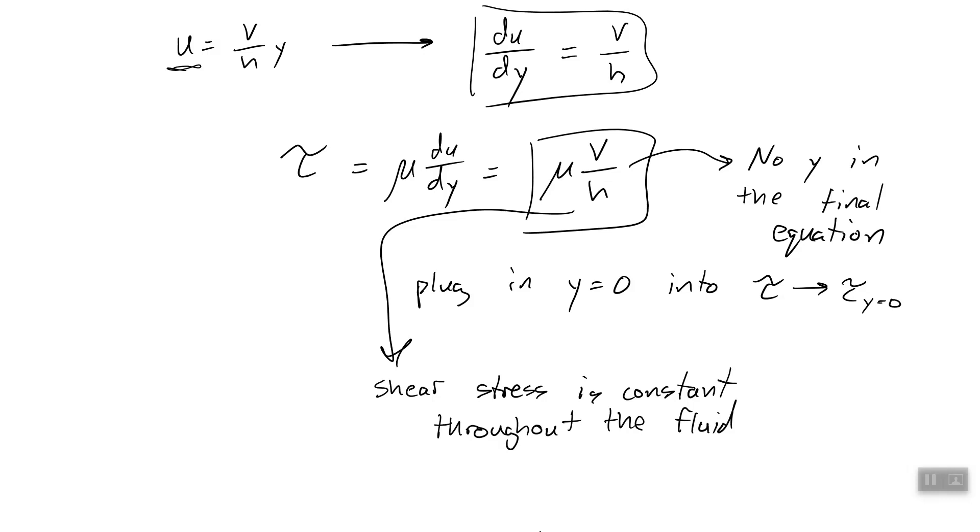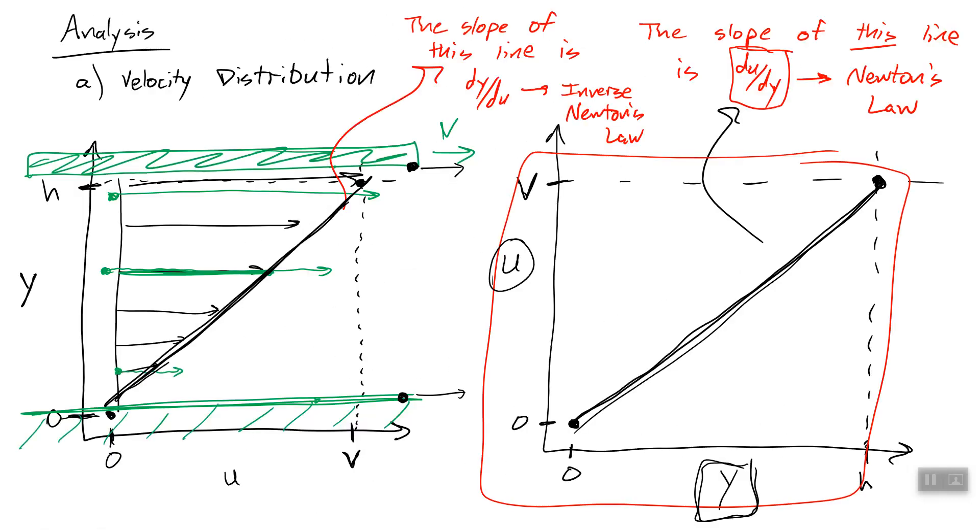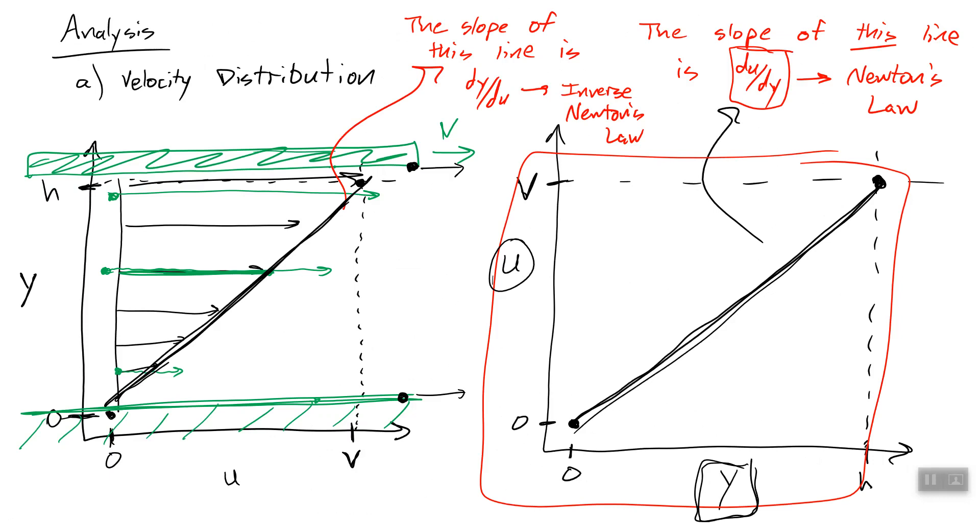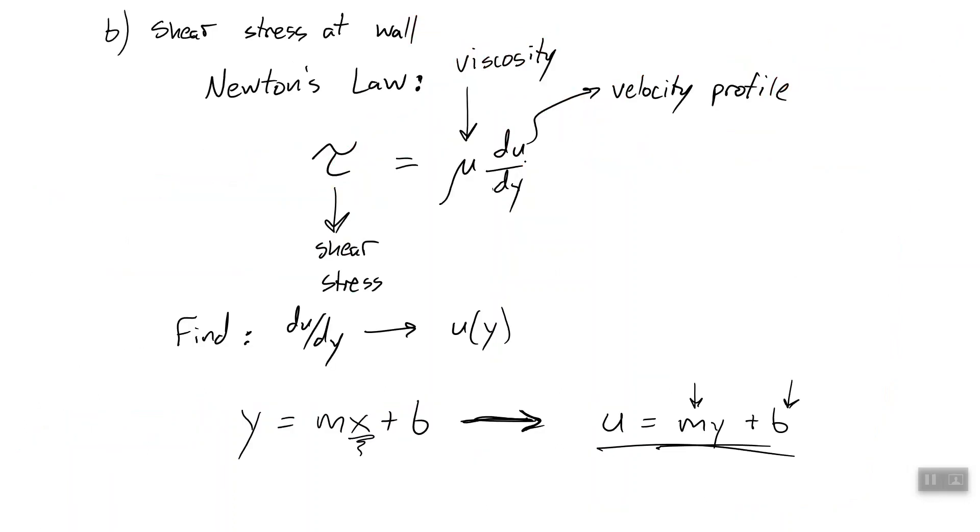And we actually could have figured that out right when we were plotting this. Remember, Newton's law tells us that the shear stress is proportional to the slope of the line at the point we want to find the shear stress. Well, because we have a line, we have a constant slope, which means du dy is a constant. So when we plug that into Newton's law, we find that the shear stress is going to be a constant.